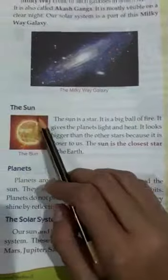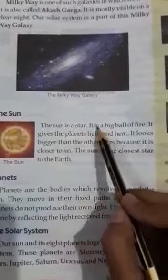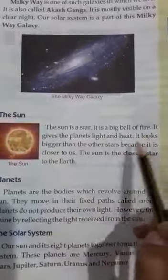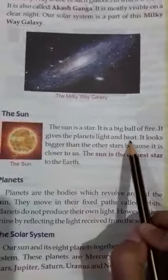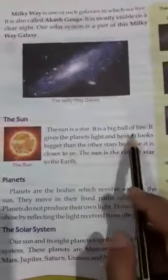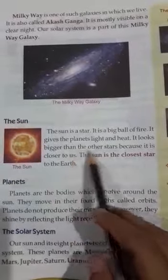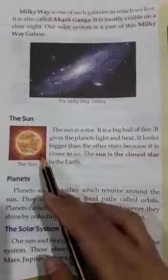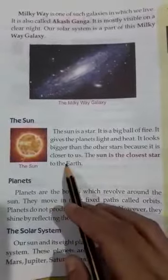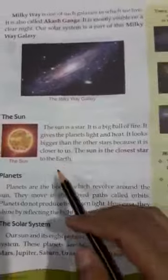Next topic: The Sun. Suraj. The sun is a star. Suraj ek tara hai. It is a big ball of fire. Yeh aag ka ek bada gola hai. It gives the planets light and heat. Yeh grahon ko prakas aur garmi deta hai. It looks bigger than the other stars because it is closer to us. Yeh anya sitaron ki tulna mein bada dikhta hai kyonki yeh hamare kareeb hai. The sun is the closest star to the earth. Surya prithvi ka sabse nikatam tara hai.